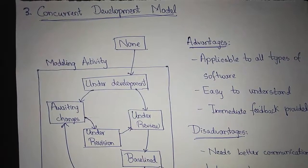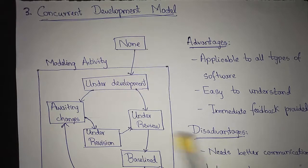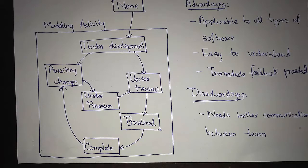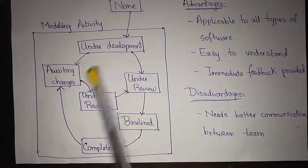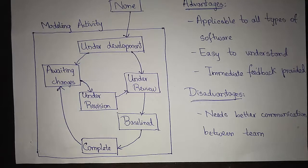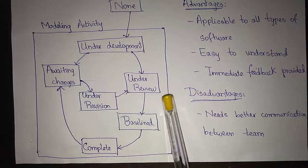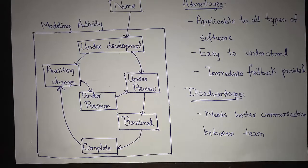The concurrent development model is the last type of model in the evolutionary models. It is developed as a series of framework activities with their associated states. For example, consider the modeling activity. The communication activity is completed in the first iteration and exists in an awaiting changes state. The modeling activity, which existed in a none state when initial communication was completed, now makes a transition into the under development state. If customers indicate any changes in requirements, the modeling activity moves from under development to awaiting changes state. It is applicable to all types of projects and provides an accurate picture of the current state of the project. Here we communicate with both the development and the customer team interactively or concurrently.